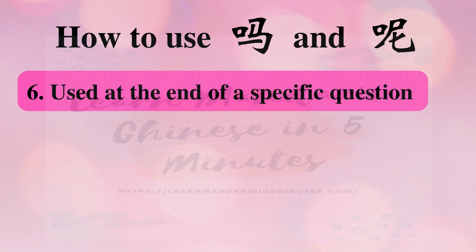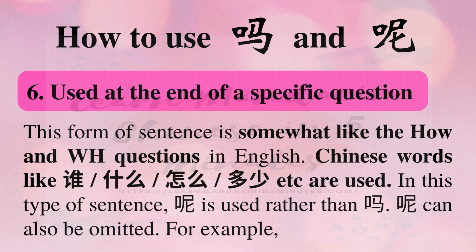Number six: 呢 is used at the end of a specific question. This form of sentence is somewhat like the how and wh-questions in English. Chinese words like 谁, 什么, 怎么, 多少, etc. are used. In this type of sentence, 呢 is used rather than 吗. 呢 can also be omitted.